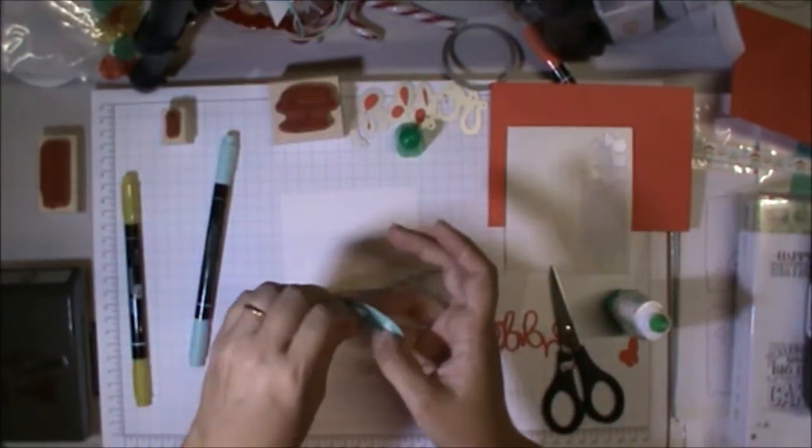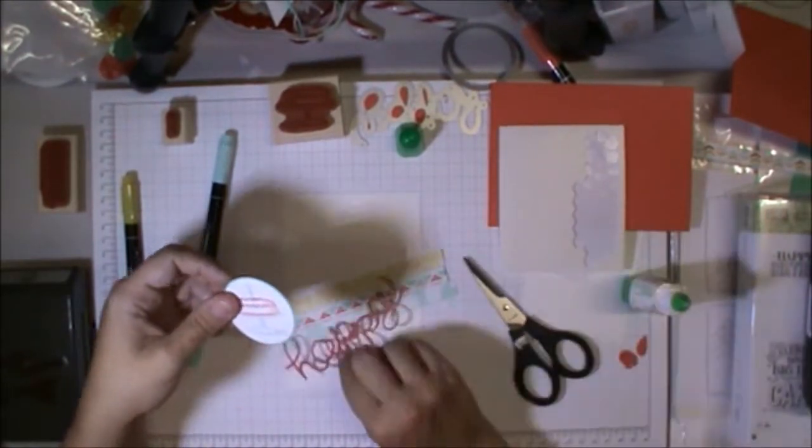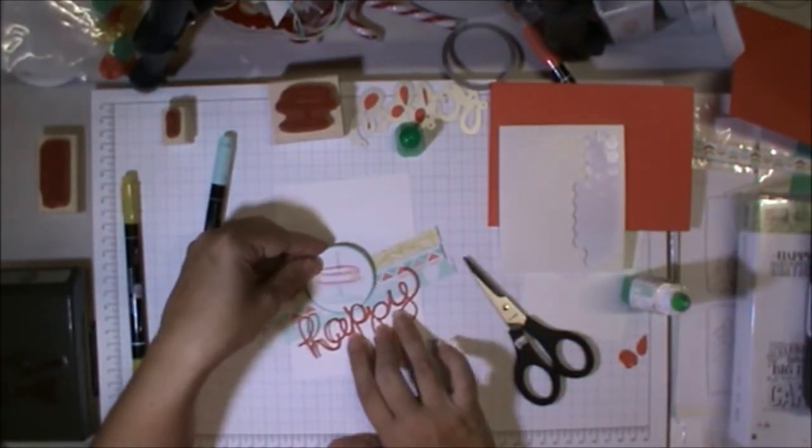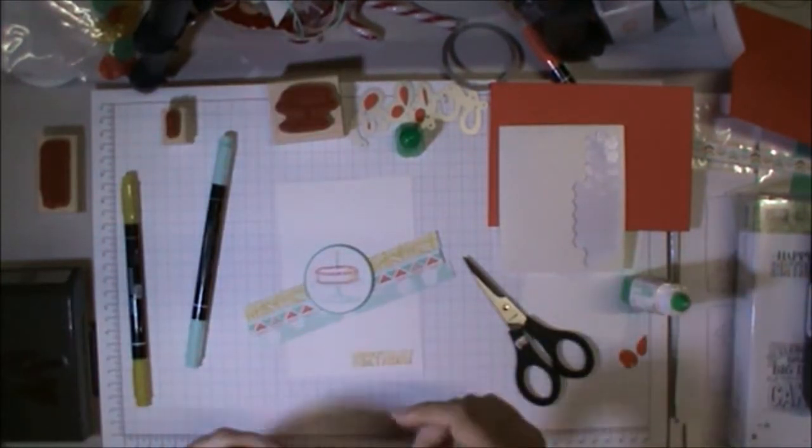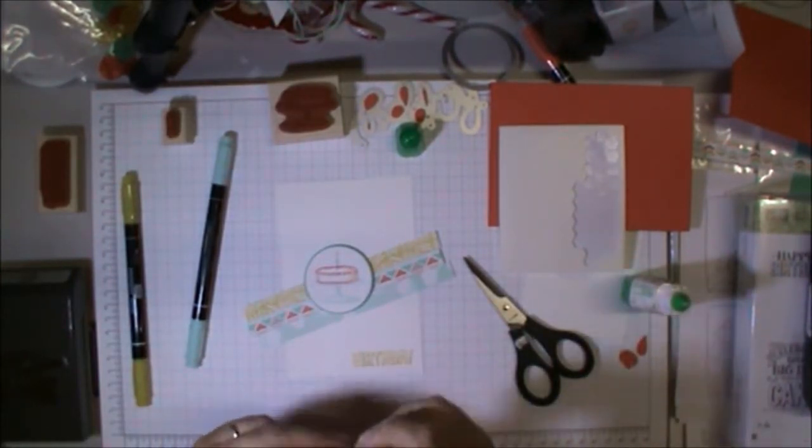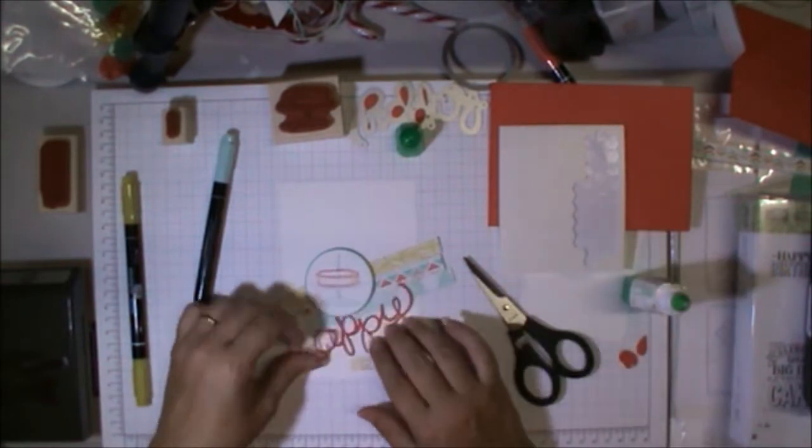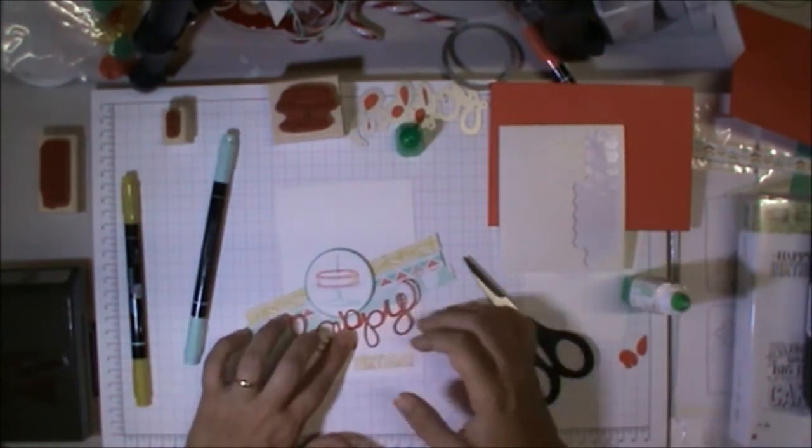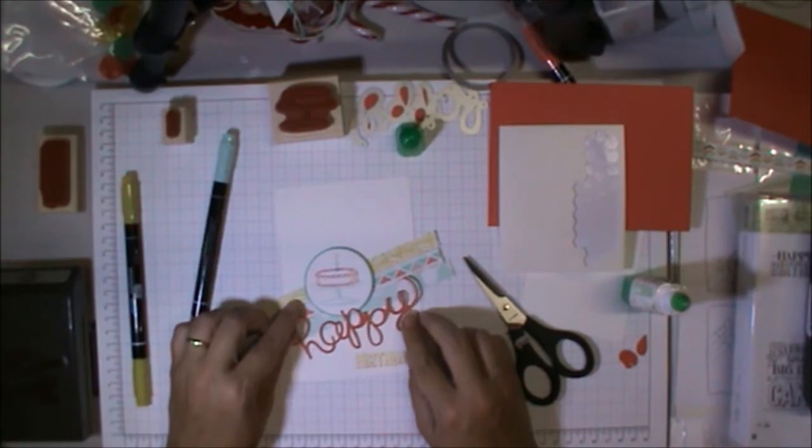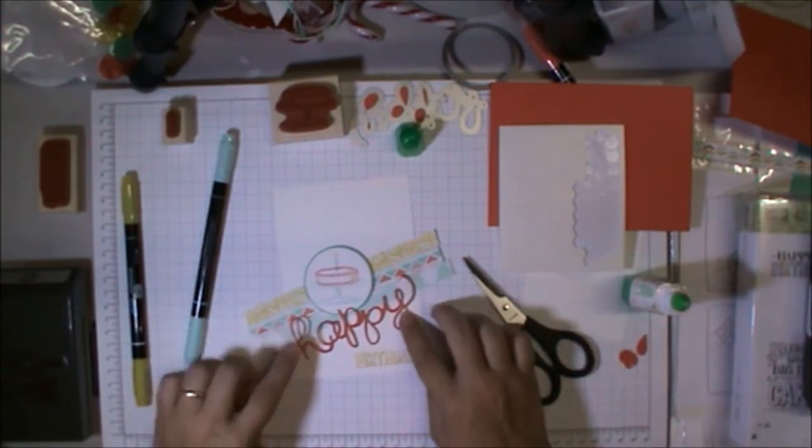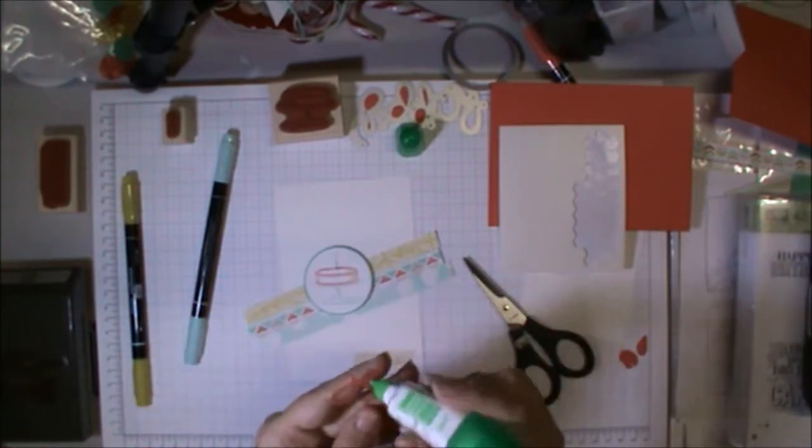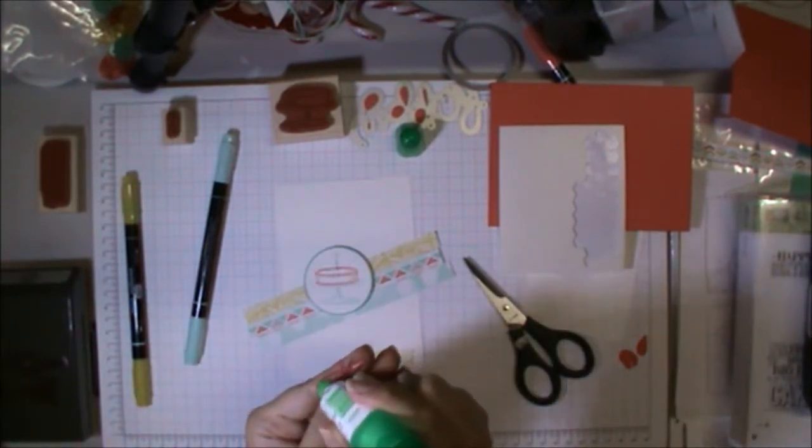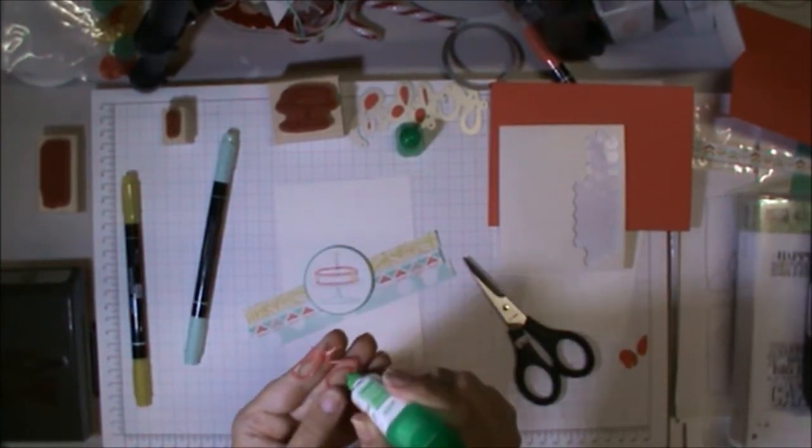To stick down the 'happy,' I used the multipurpose liquid glue—the little green and white bottle. It's just a matter of putting little bits of glue all the way along it. It can get a little messy depending on how fast your glue comes out of the bottle.